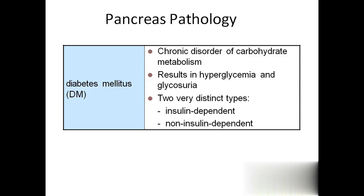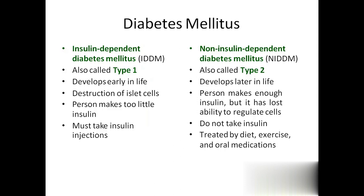There are two types of diabetes mellitus: type 1 is insulin-dependent diabetes mellitus, and type 2 is non-insulin-dependent. Type 1 develops earlier in life and is caused by damage to the islets of Langerhans. For type 2, the person has enough insulin but due to a problem with the receptors, glucose is not taken into the cells. For type 1, the person must take insulin. For type 2, treatment is with diet and exercise only.